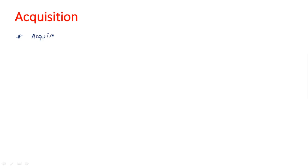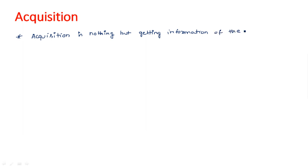Acquisition is nothing but acquiring the presence of the target — acquiring the information related to the target, whether the target is located or not. So acquisition means getting the information of the target, that means whether it is there or not.